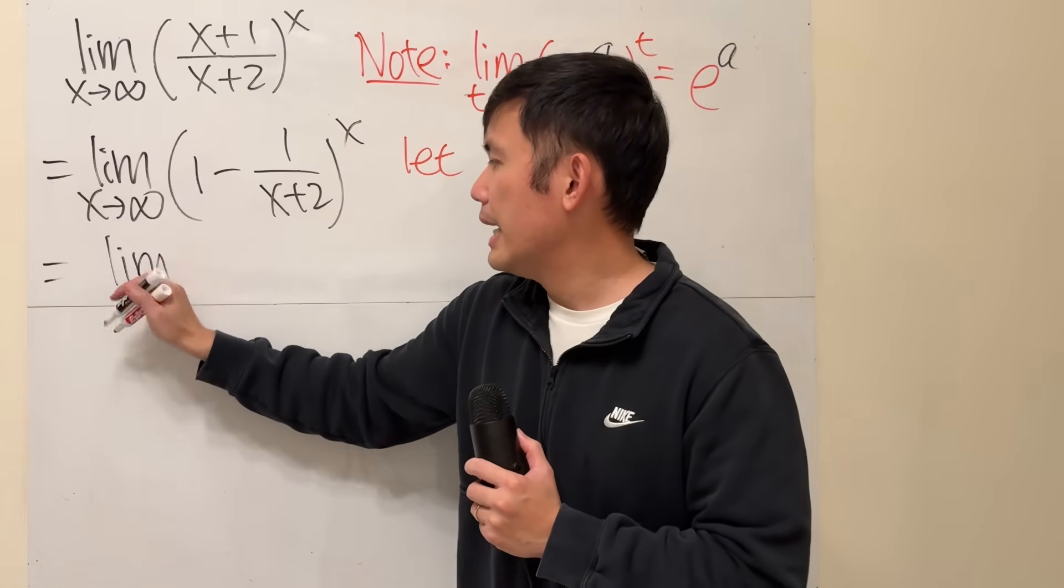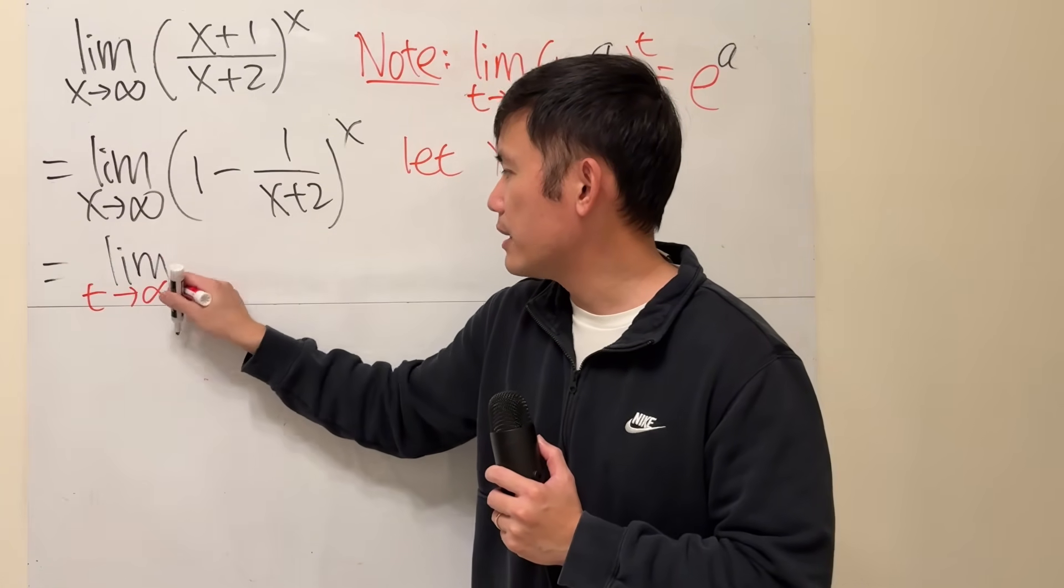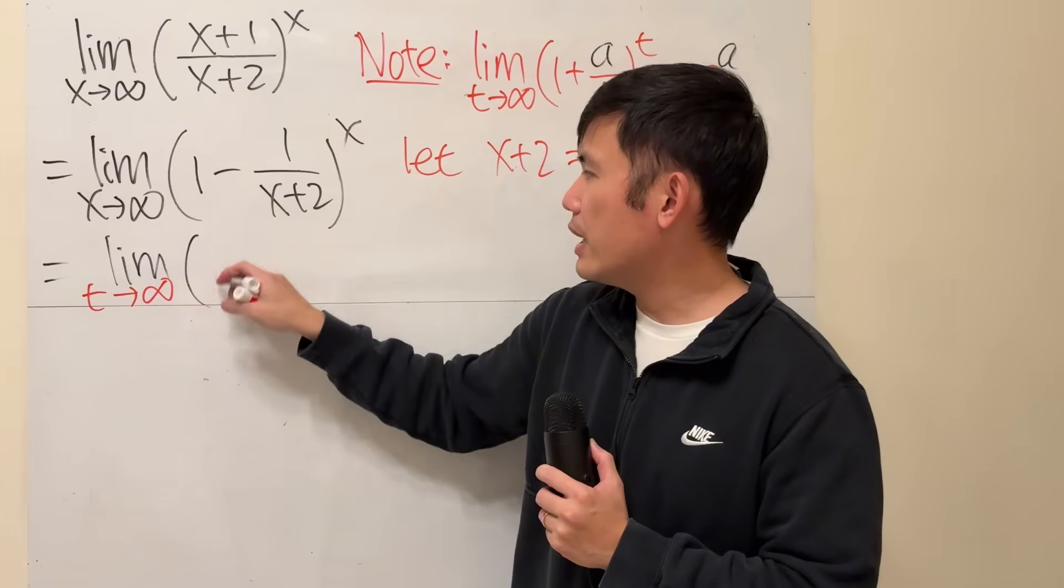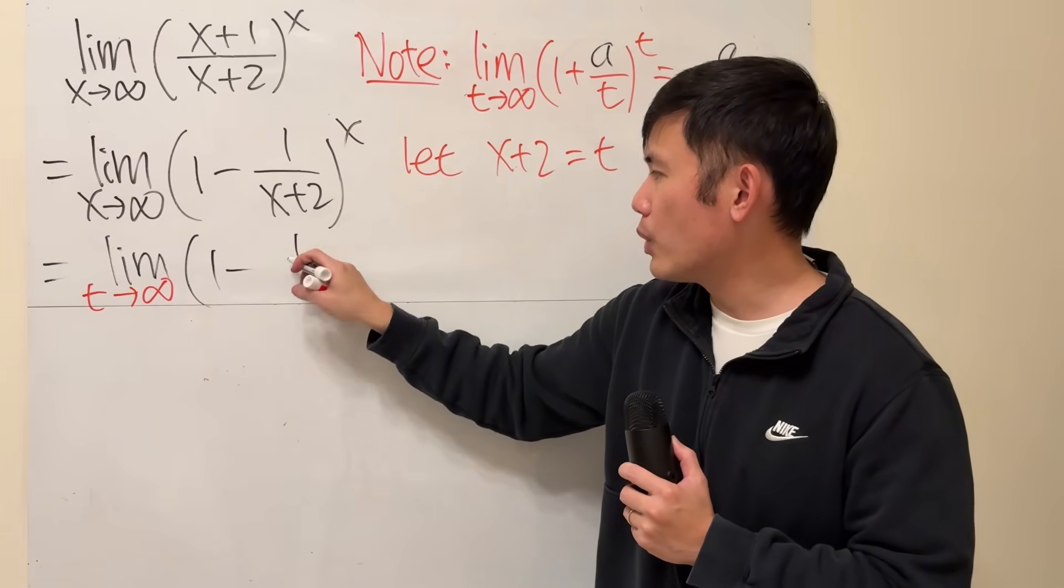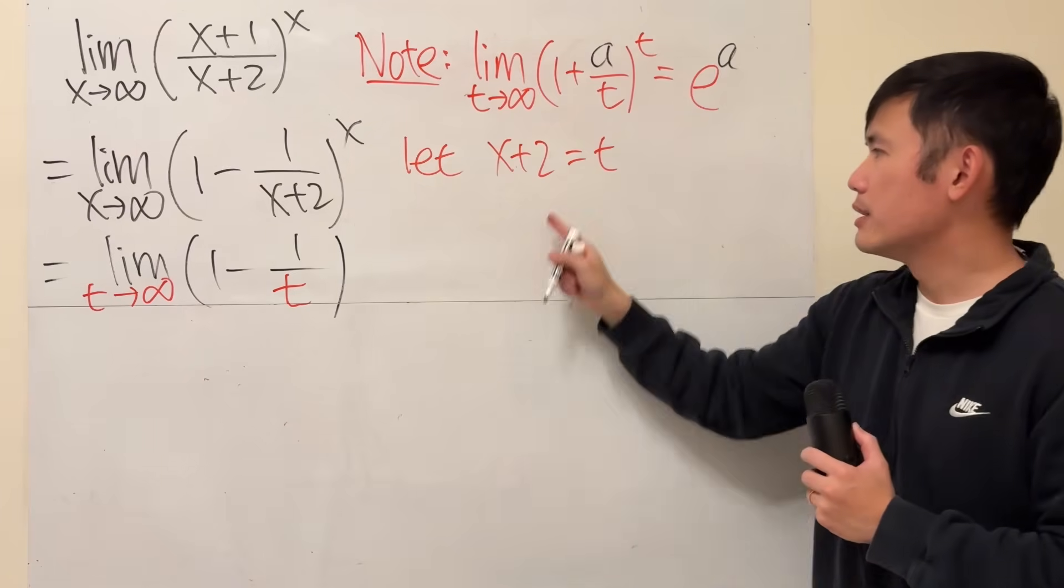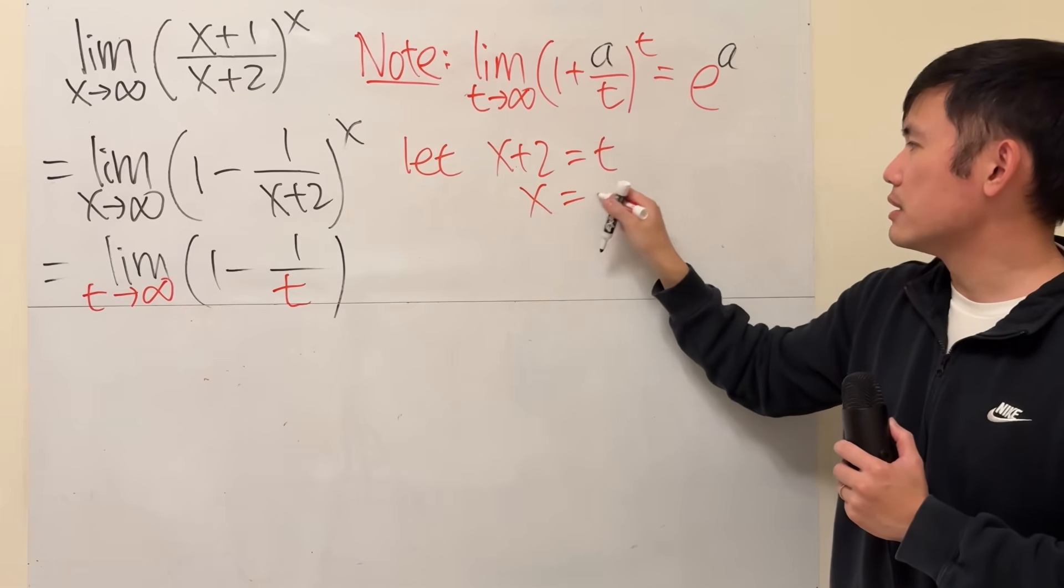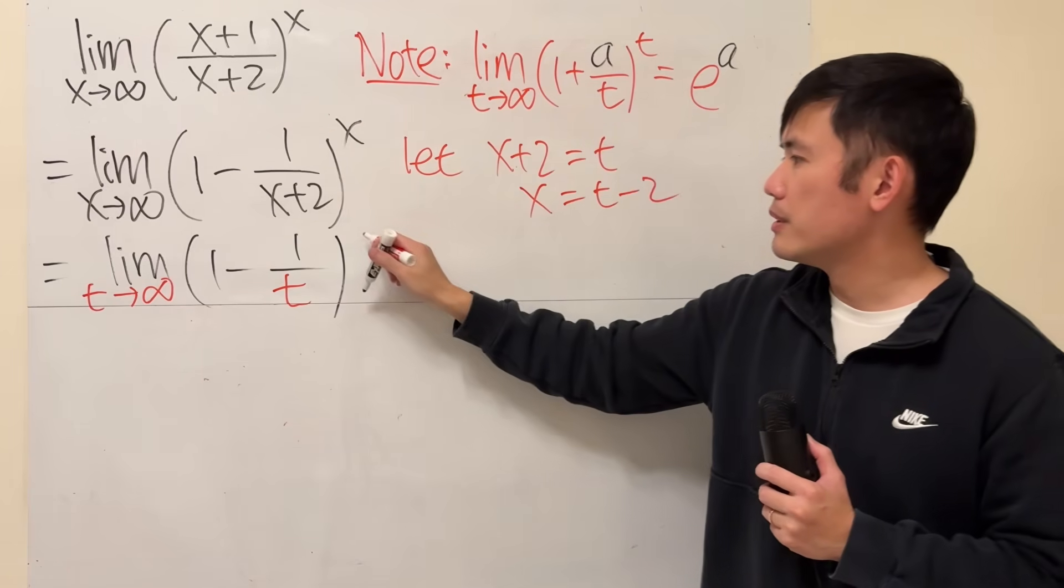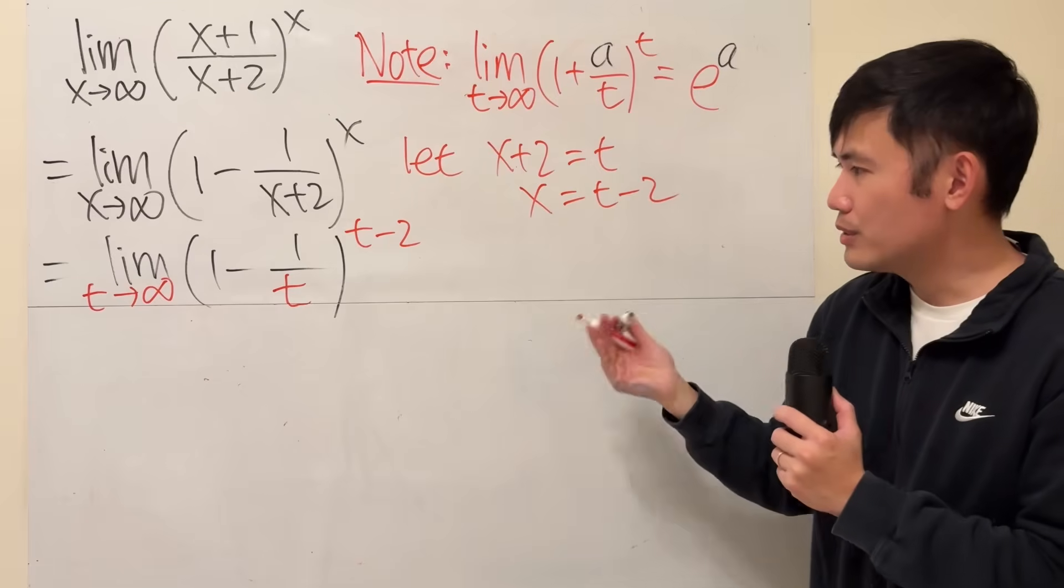So, the next line is the limit as t going to infinity as well. And then we have 1 minus 1 over, here is the t. And the x is what? Just subtract 2 to both sides, x is t minus 2. Quite nice, huh? So, that's what we have.